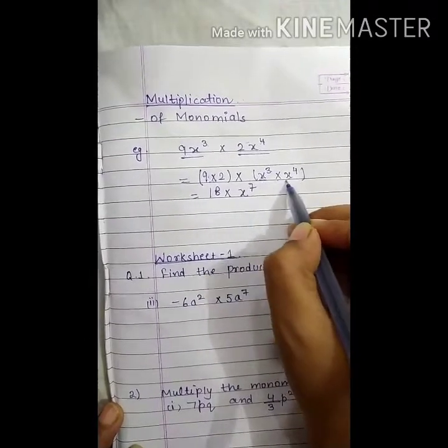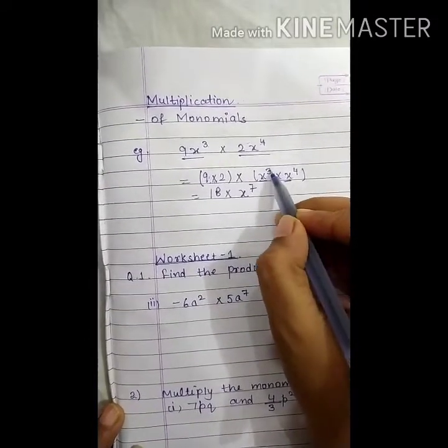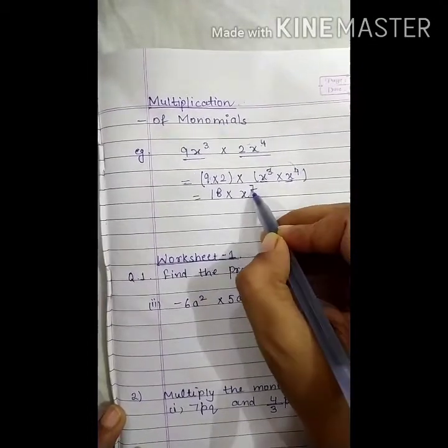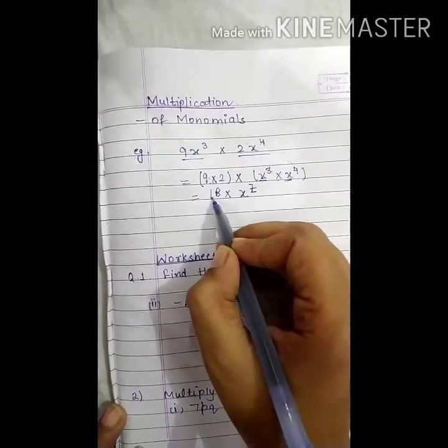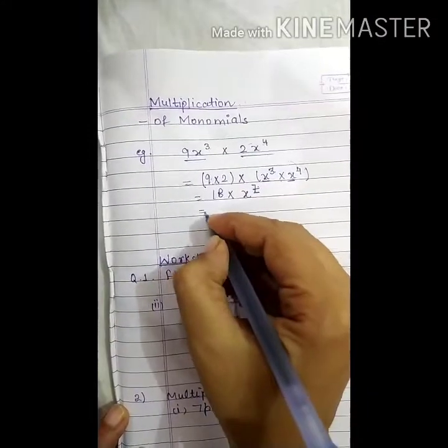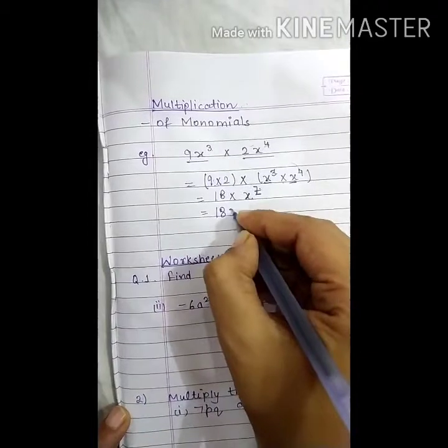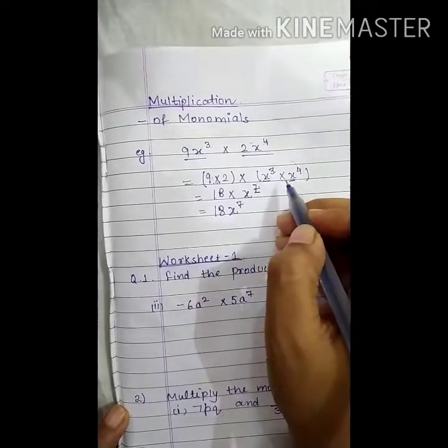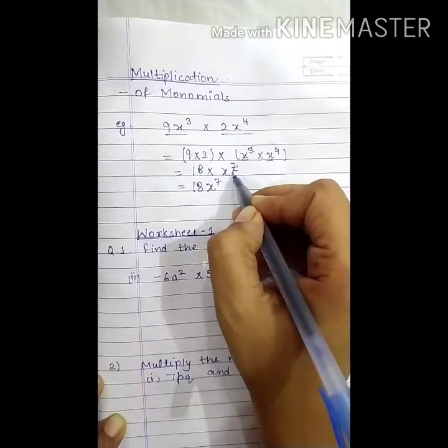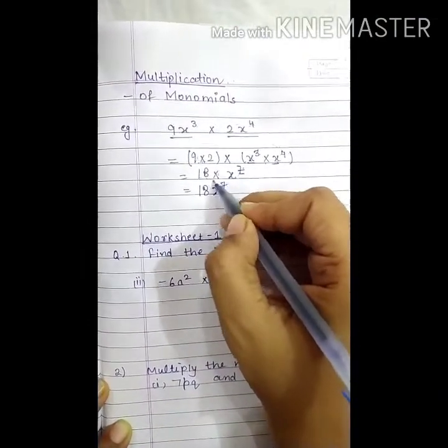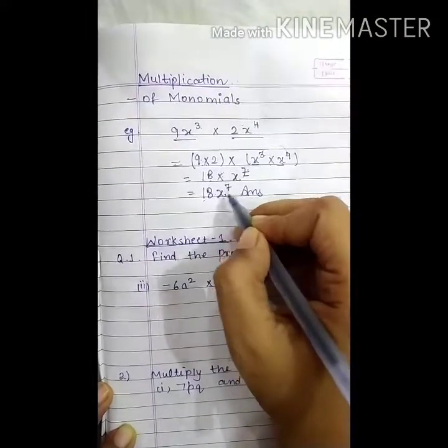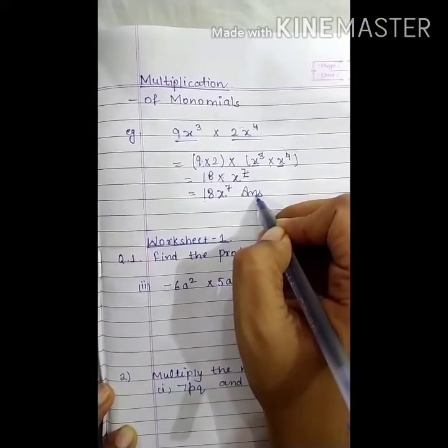Or, you can use law of exponents done in chapter number 4. See, base is same. It is x. So, just add the exponents. 3 and 4 is 7. Now, 18 multiply by x⁷ is nothing but 18x⁷. Because, when we multiply constant and variable, we omit the multiplication sign. So, 18x⁷ is final answer.